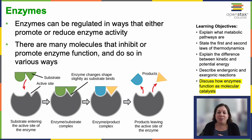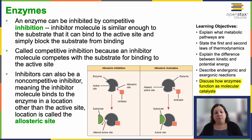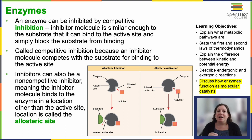Some molecules can inhibit or promote enzyme function. Competitive inhibition occurs when an inhibitor molecule blocks the active site — they're competing for the same spot. Non-competitive inhibition happens when an inhibitor binds to an allosteric site, a different spot on the enzyme, so they're not competing for the same location.